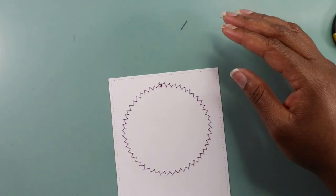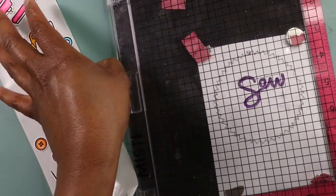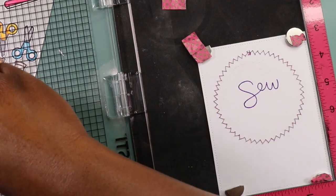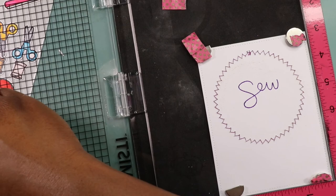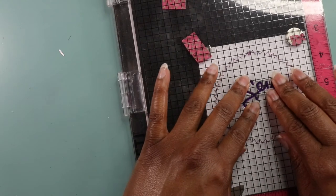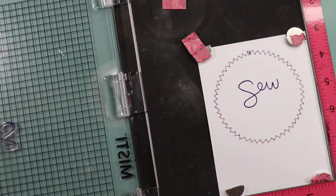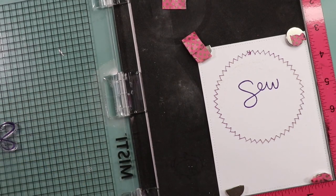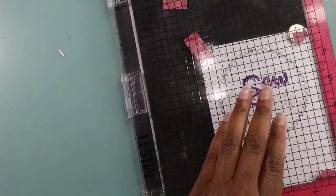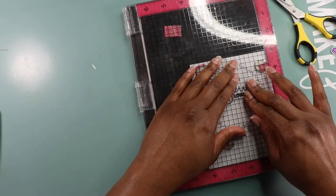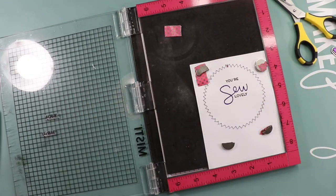Alright so after I have my little circle stitched out I tied those knots and then I stamped on my sentiment. Now I am using two different colors so the first thing I did was stamp the sew in a purple color and it's like a deep plum color actually and I stamped it a couple of times so I did use my misty stamp tool to make sure that I got a good impression. And once I had my word stamped out then I went in with some black versafine ink and I'm going to stamp the your and the lovely in that black versafine.